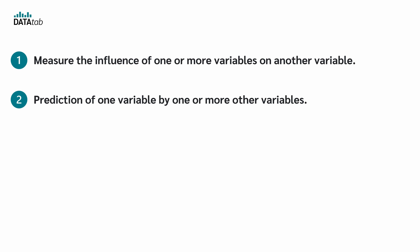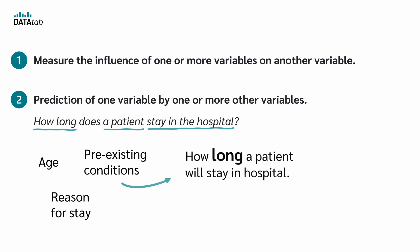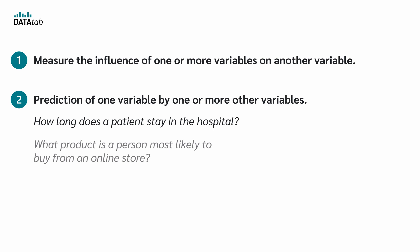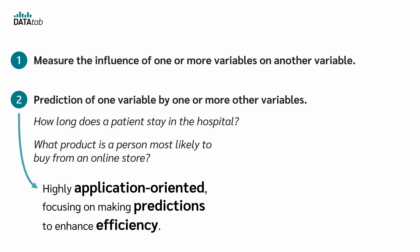The second area — using regression for predictions — is more application-oriented. To get the most out of hospital occupancy, you might be interested in how long a patient will stay in the hospital. Based on the characteristics of the prospective patient, such as age, reason for stay, and pre-existing conditions, you want to know how long that person is likely to stay. Based on this prediction, bed planning can then be optimized. Or as an operator of an online store, you are very interested in which product a person is most likely to buy, in order to suggest it to the visitor and increase sales. This second point is highly application-oriented, focusing on making predictions to enhance efficiency.